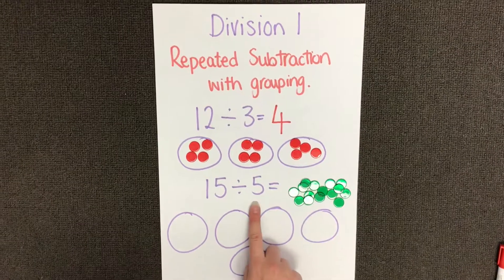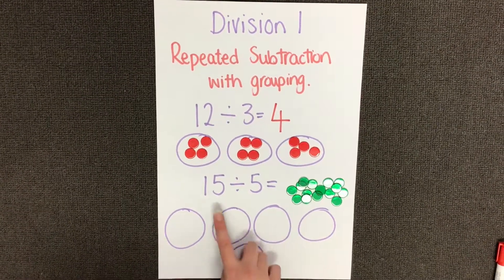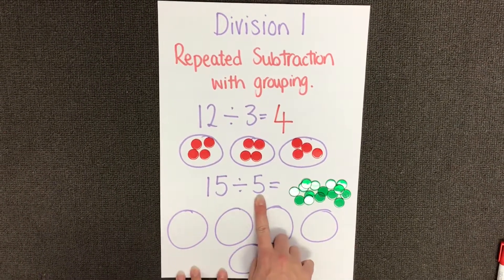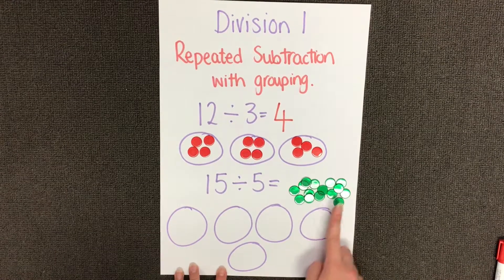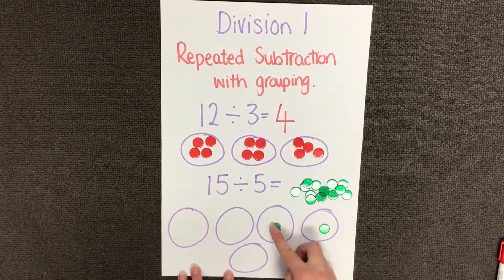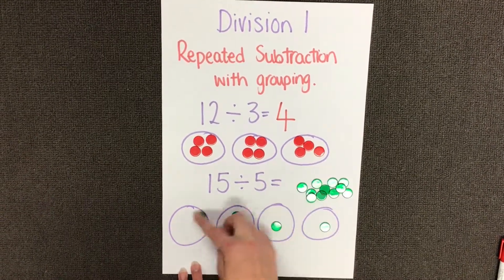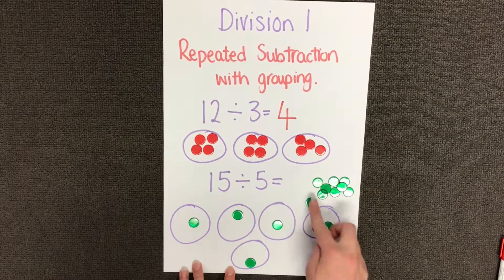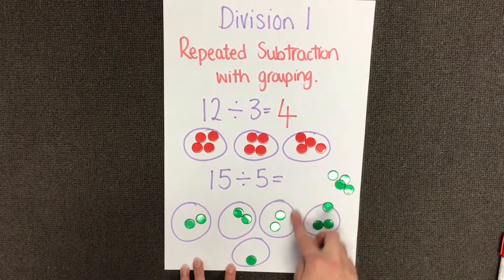Let's try with a slightly different example. This time we've got 15 and we're dividing by 5, so I need 5 groups and 15 counters. I am again going to share my counters into my five groups, making sure that I do so equally.